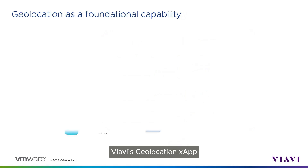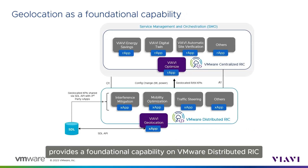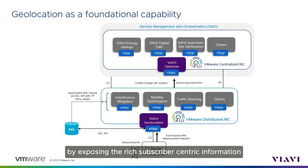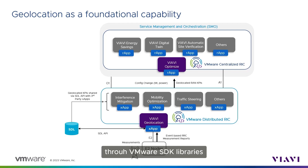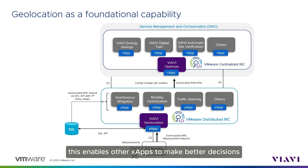VIAVI's Geolocation XApp provides a foundational capability on VMware Distributed RIC by exposing the rich subscriber-centric information through VMware SDK libraries such as the SDL API and the inner XApp API. This enables other XApps to make better decisions.